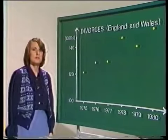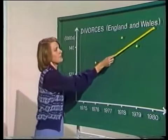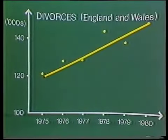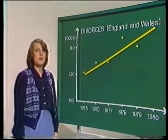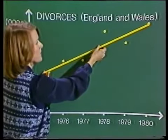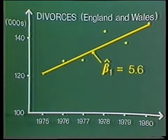How can we make a start on it? Well, we assume that there's a straight line which truly underlies this divorce data. And it's the slope of this line whose value we don't know. How can we estimate this unknown parameter beta? Here are some possible methods. First, we could simply join the first and last points and use the slope of this line as our estimate. We'll denote the slope of this line by the symbol beta 1 hat. The circumflex symbol on top of the beta 1 indicates that this is an estimate for beta. In fact, with this data, beta 1 hat is 5,600 divorces a year.